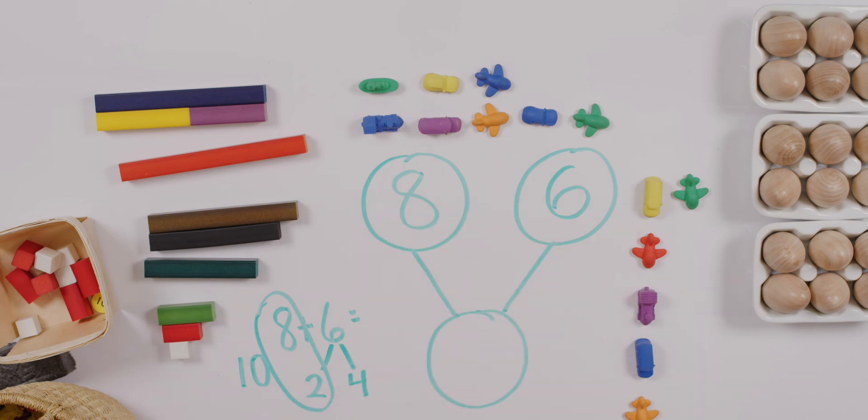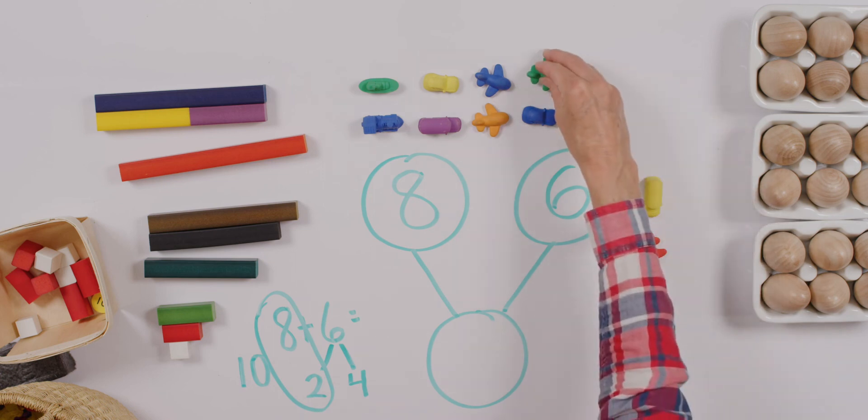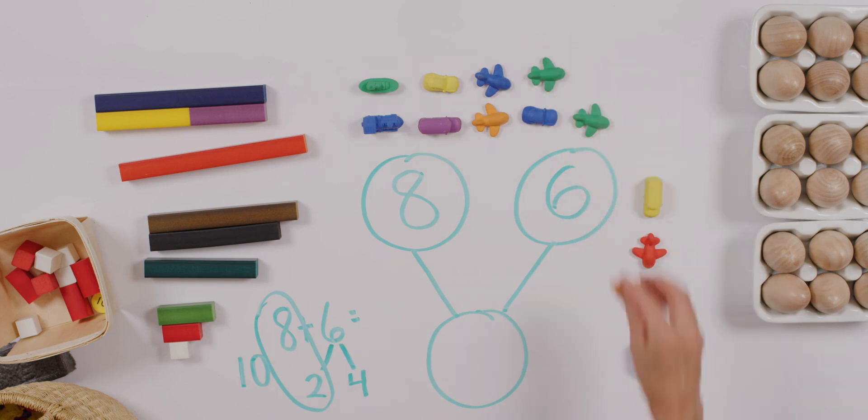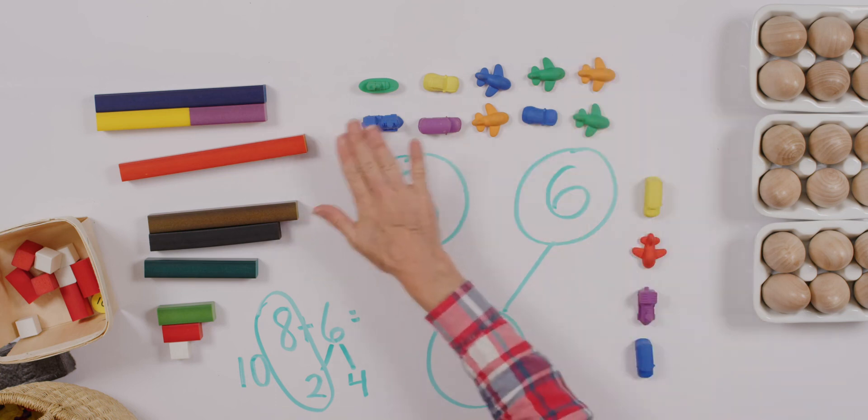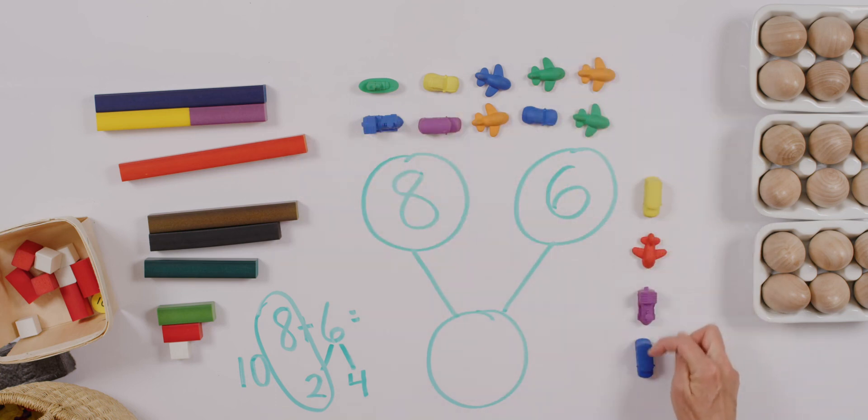I am going to move two from my six. I've got my 10 and my four more. So eight plus six equals, let's loop these together, 10, 11, 12, 13, 14.